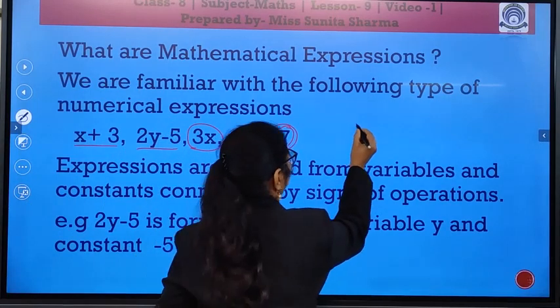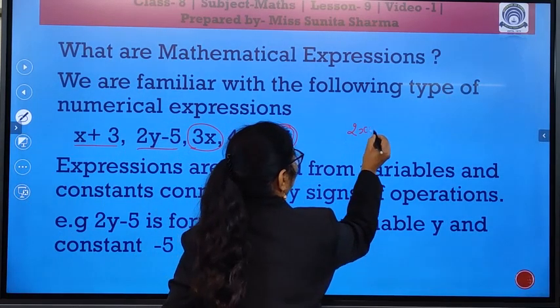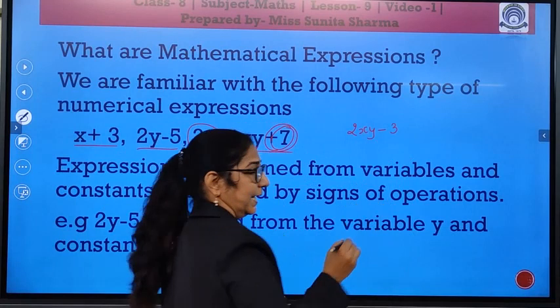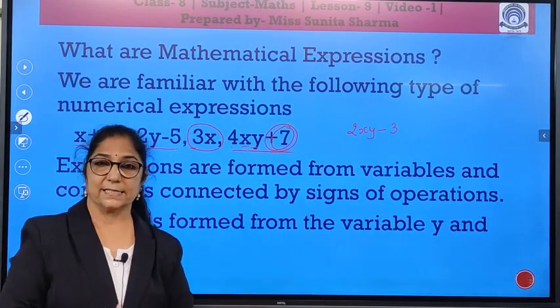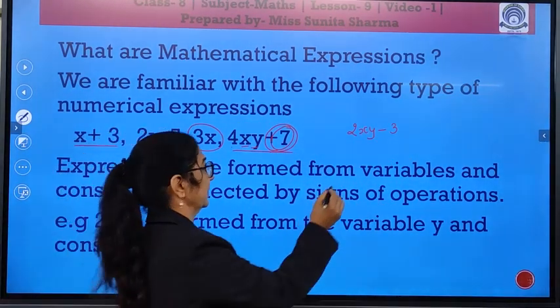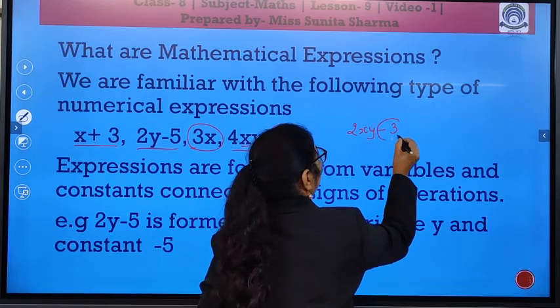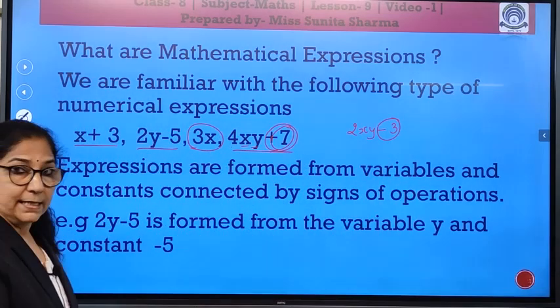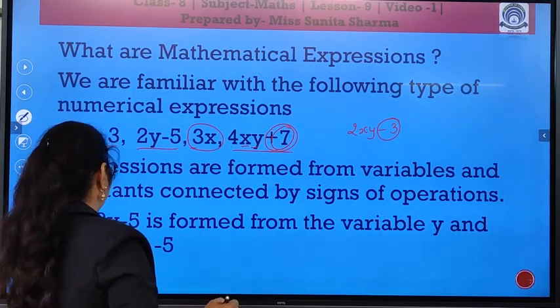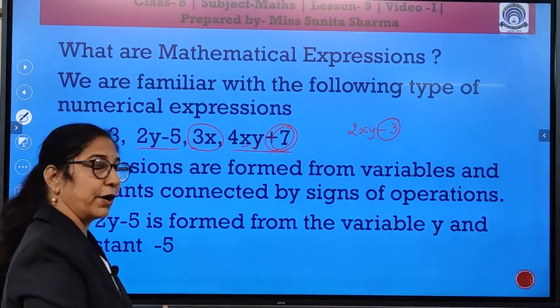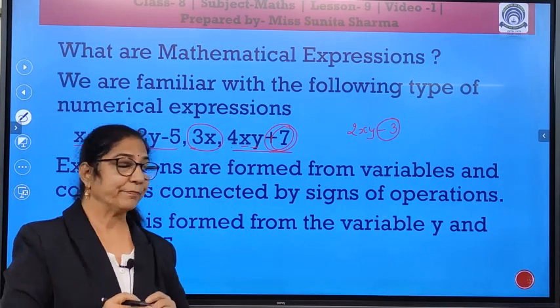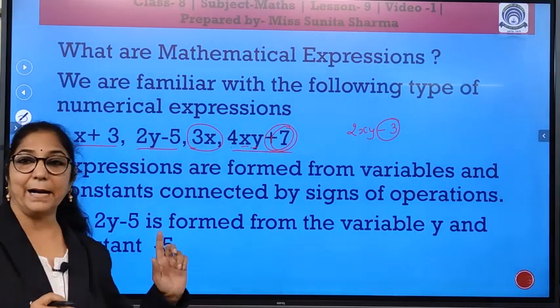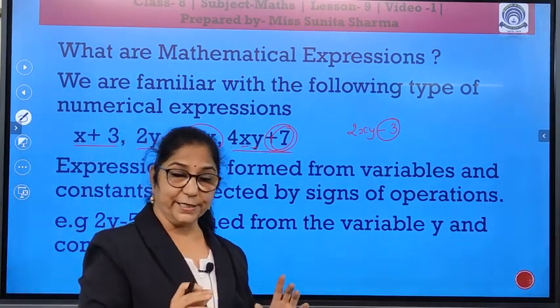If I give you 2xy minus 3 and if the constant is asked, then you will write the constant is minus 3. In 2y minus 5 is formed from the variable y and constant minus 5. Is it clear, children?